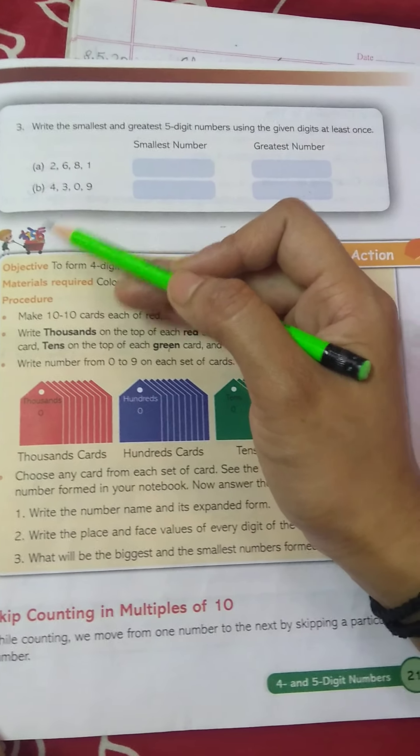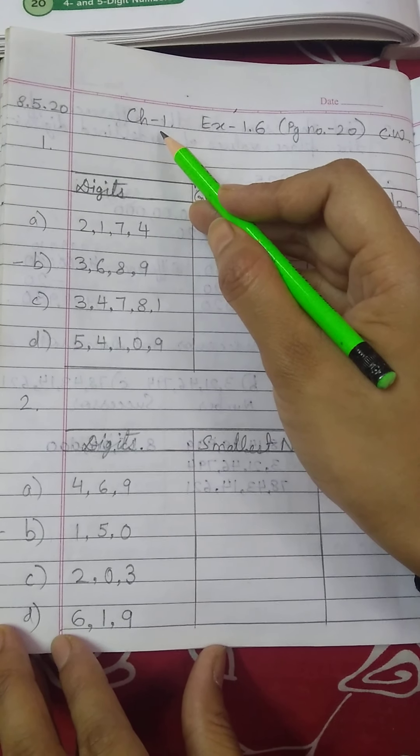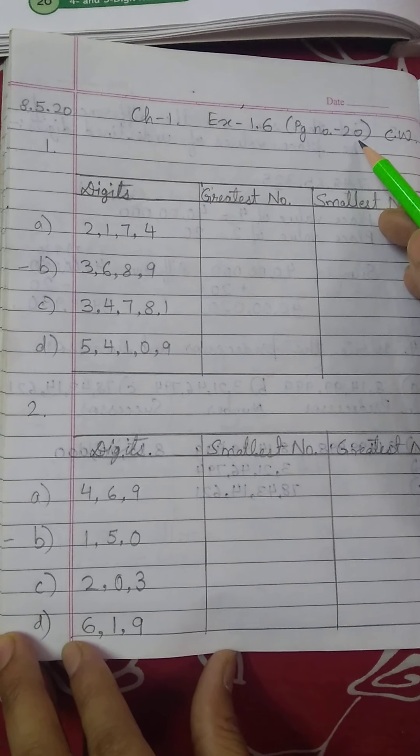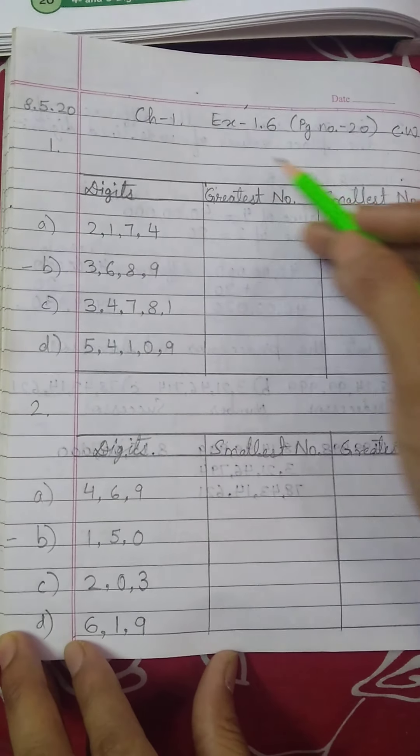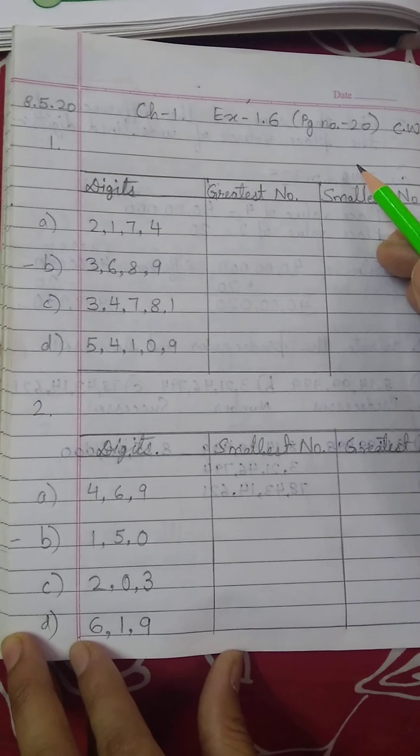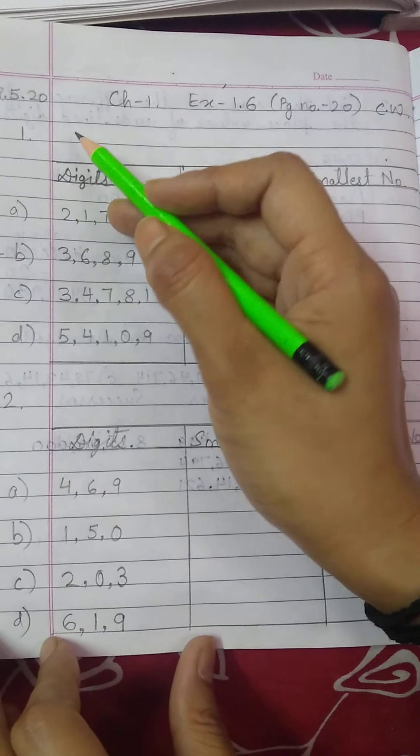Look at your copy students. Here I have mentioned today's date. What is it? 8th May, right? And here on the other corner, class work. On the top mention chapter number 1, exercise 1.6 which is on page number 20. Question number 1. Here I have not written the question. But you know, when you copy down the book, you will write the question neatly. Exactly same question. What is the question?